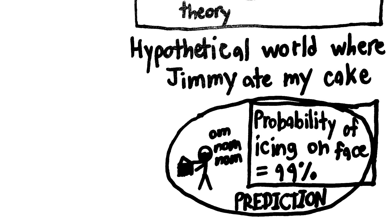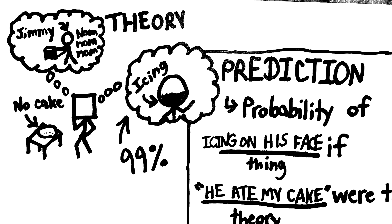So, the predictions of a theory in Bayesianism are actually probabilities based on what the world would look like if our theory was true.